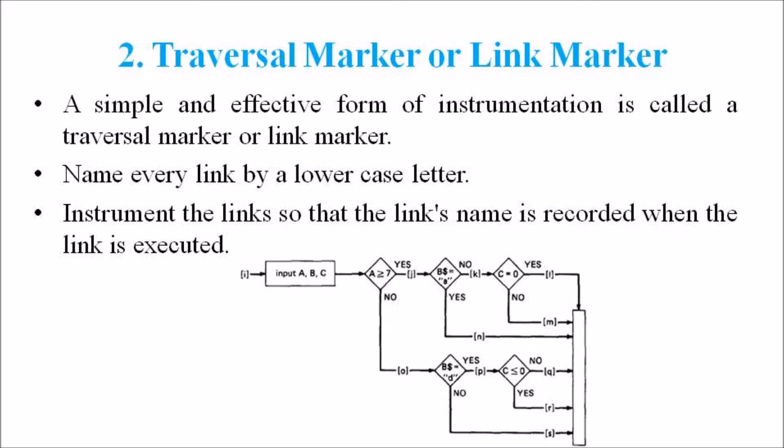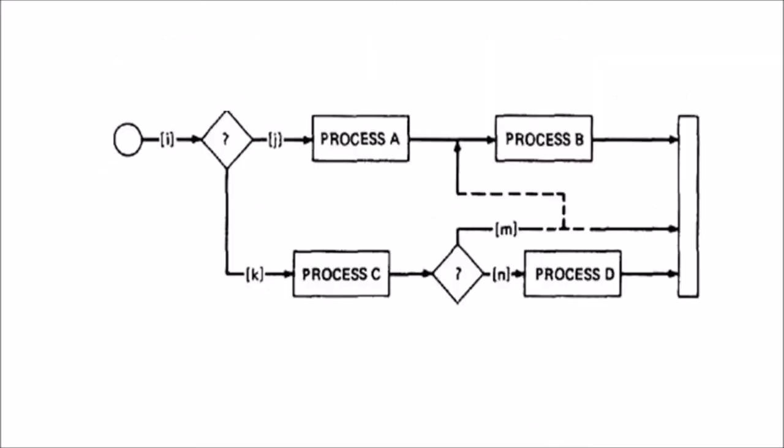Why are single markers not enough? Unfortunately, a single link marker may not do the trick because links can be chewed by open bugs. We intended to traverse the IKM path but because of a rampaging go to in the middle of the M link we go to process B. If coincidental correctness is against us, the outcome will be the same and we won't know about the bug. So these are the conditions for traversal marker or link marker method.